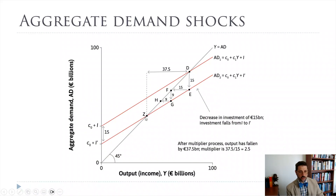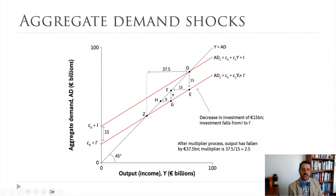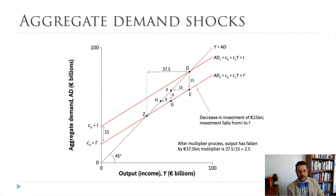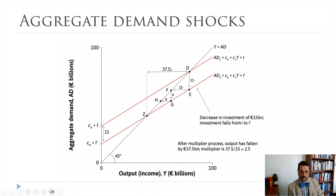The total change is $37.5 billion in GDP due to that initial change of $15 billion. With our marginal propensity to consume at 0.6: after the initial $15 billion drop, people decrease spending by $9 billion (15 × 0.6), then 9 × 0.6 = $5.4 billion, then 5.4 × 0.6, and we keep going until we eventually reach $37.5 billion. The multiplier is the total change in GDP ($37.5 billion) divided by the initial change in spending ($15 billion), which equals 2.5.